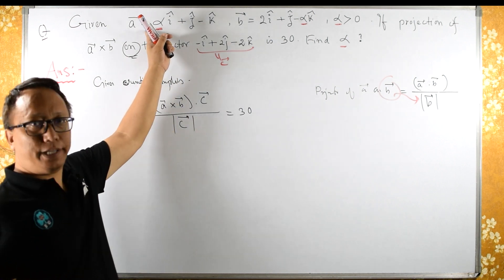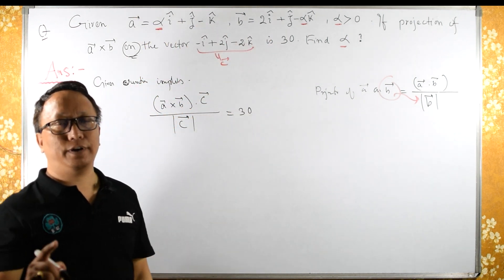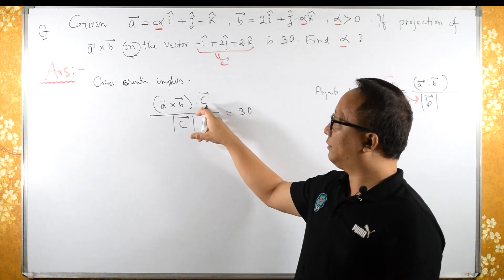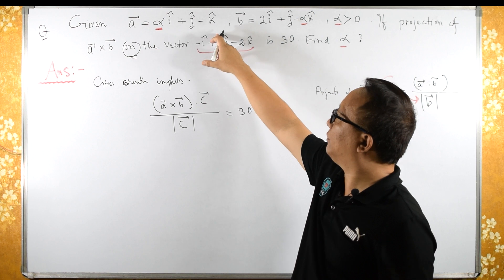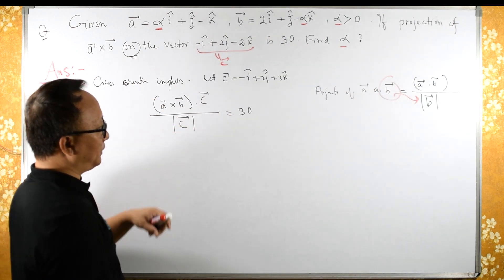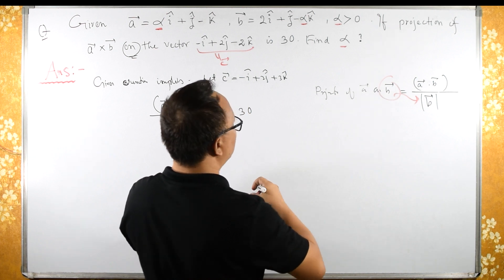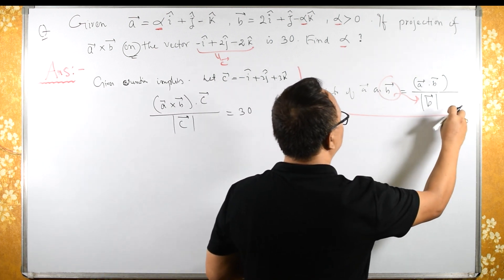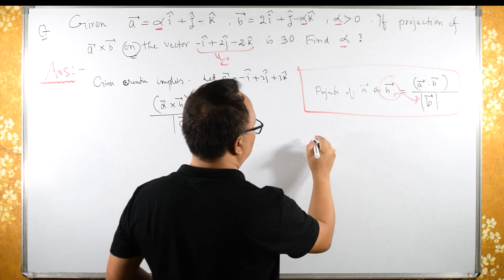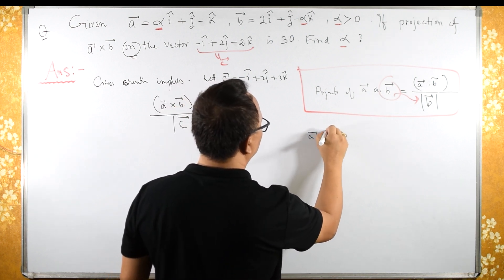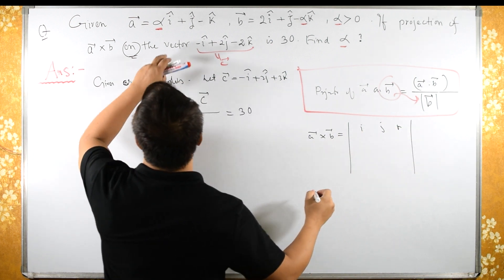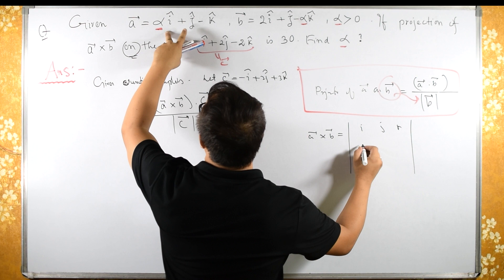We have vector a and vector b given. We need to find a cross b, and then take the dot product of that result with vector c. Let us now find a cross b using the determinant formula: a cross b equals the determinant of i, j, k in the first row.